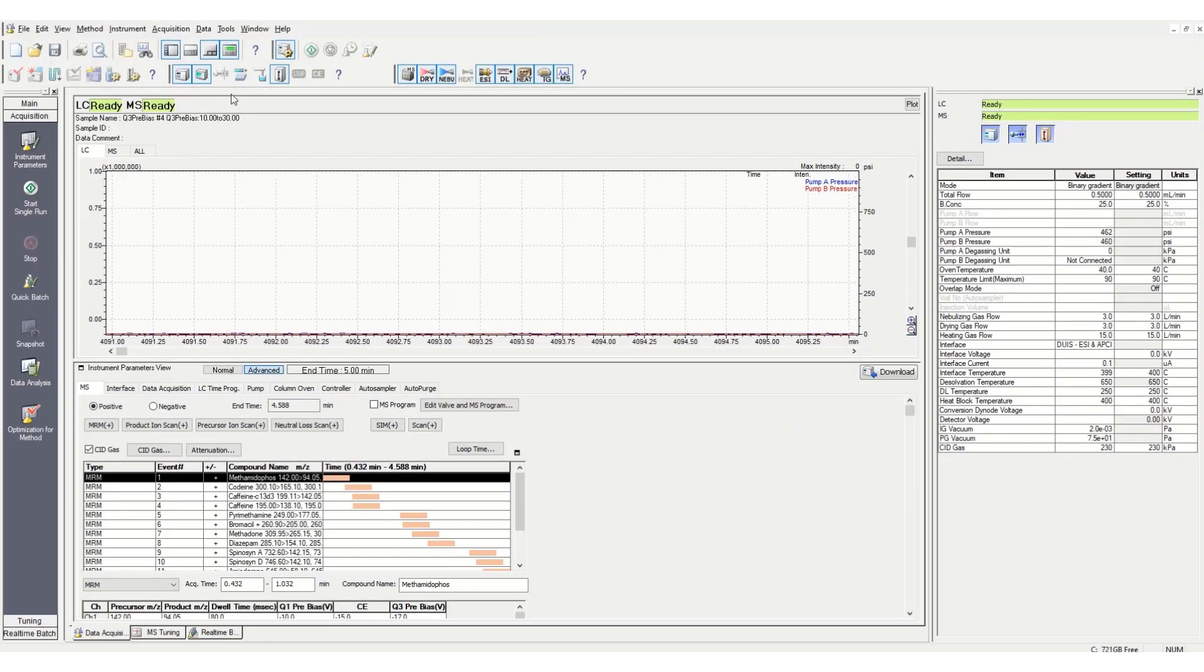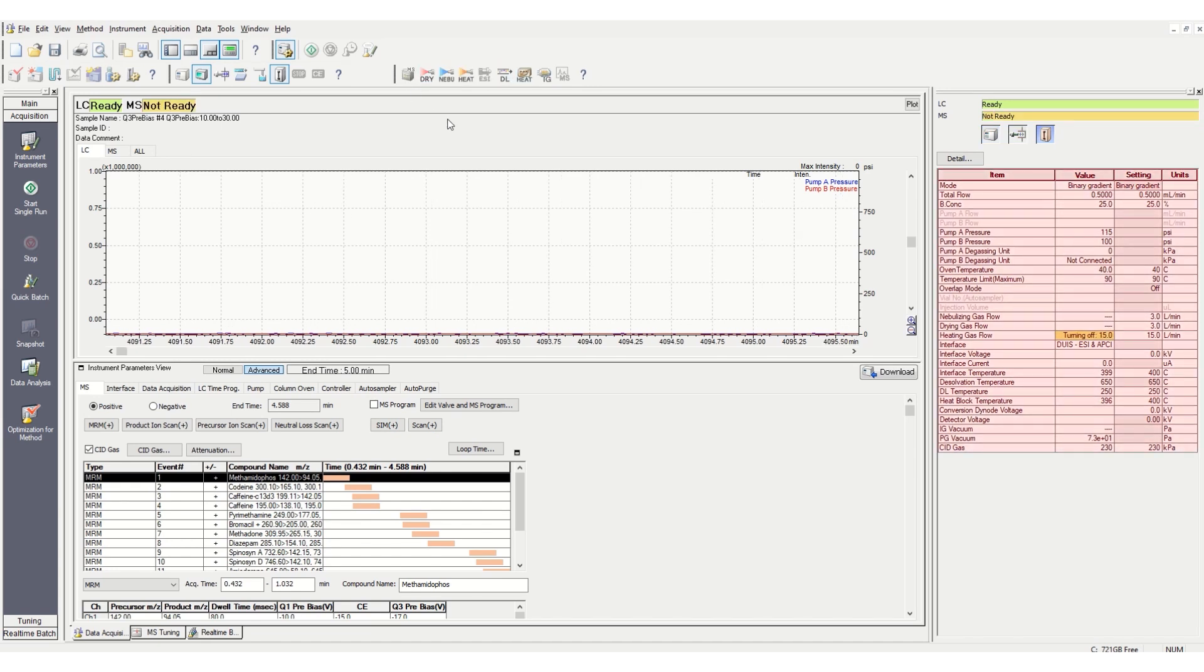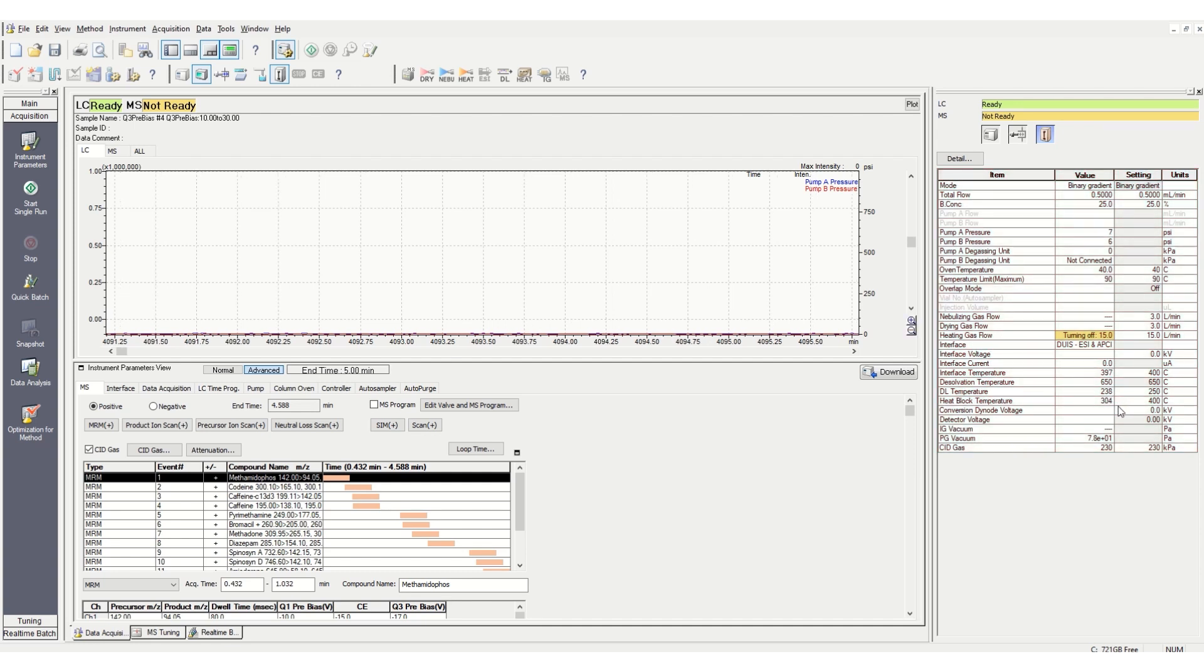First, open Lab Solutions real-time analysis and turn off all gas flows and heaters. You can see the instrument monitor pane. Make sure temperatures have fallen to 50 degrees Celsius before performing the work.